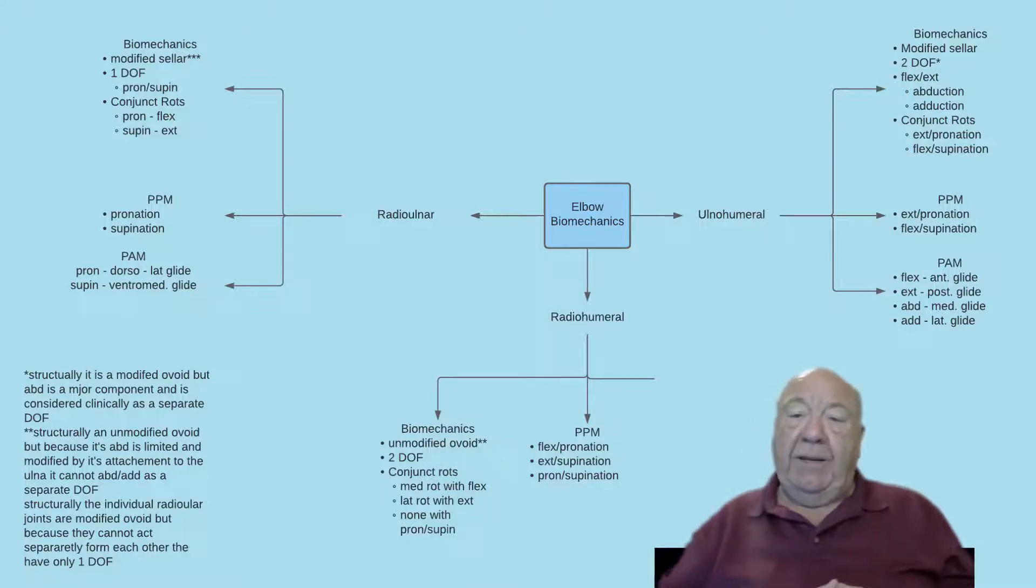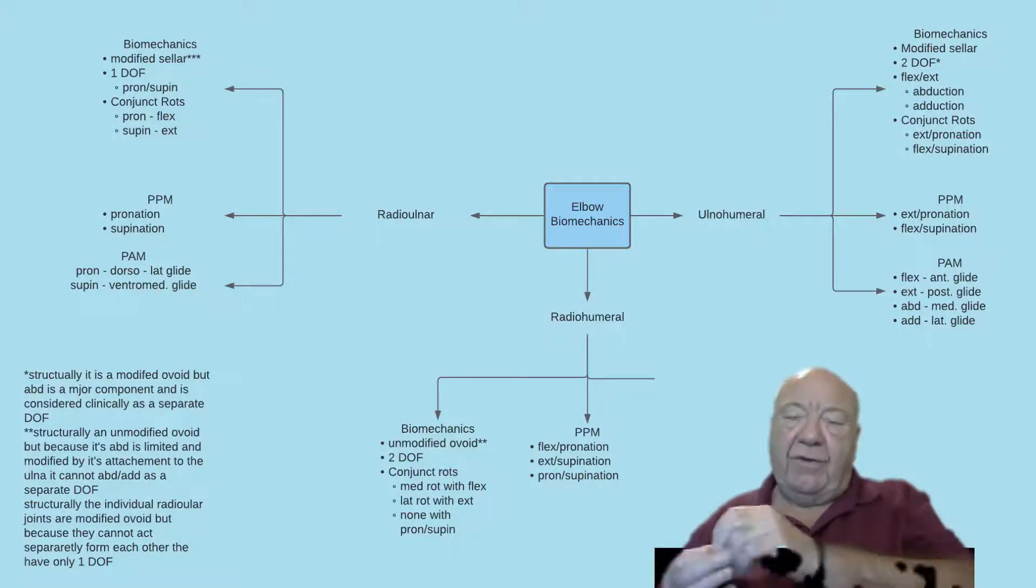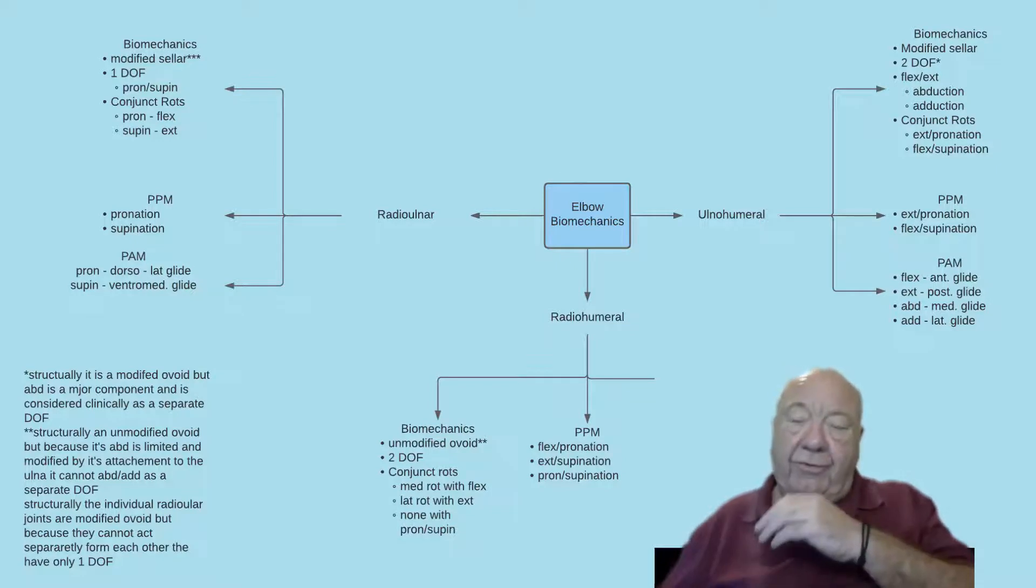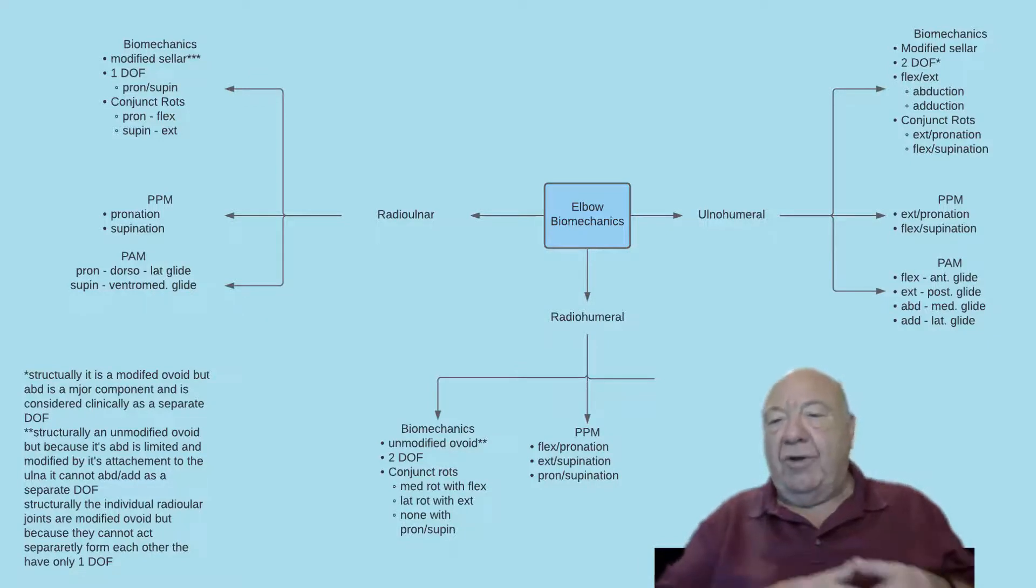For the arthrokinematic test, flexion and extension will be an anterior and posterior glide respectively, while abduction and adduction will be medial and lateral glides. That's because for flexion-extension, the olecranon presents a concave surface to the trochlea, so the arthrokinematic is in the same direction as the osteokinematic.